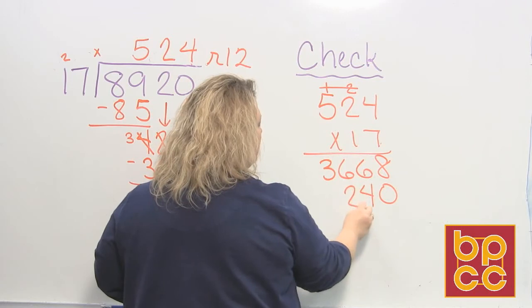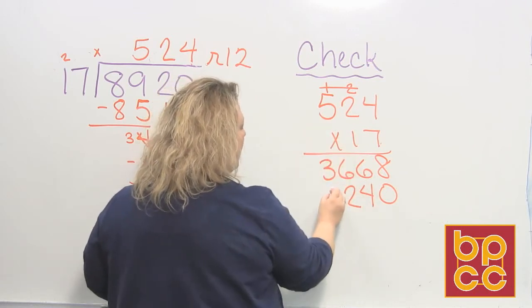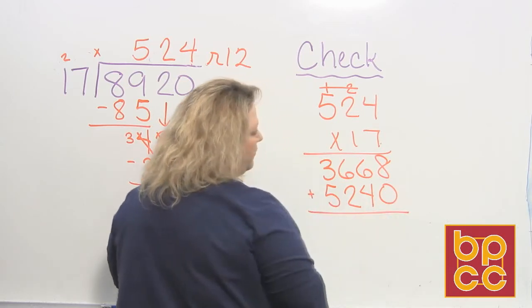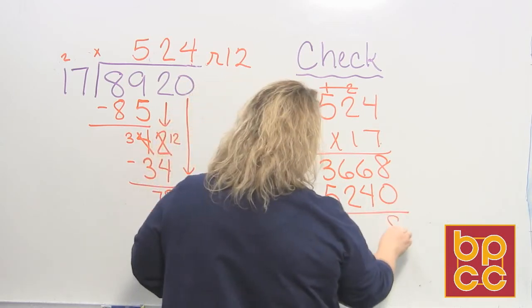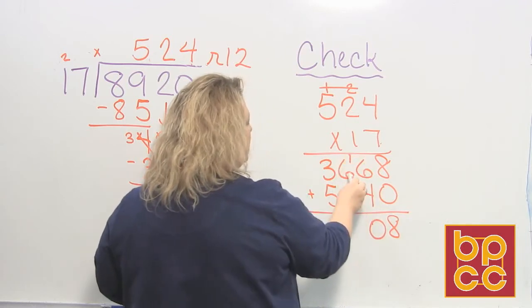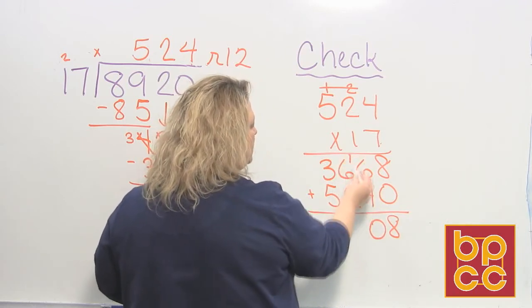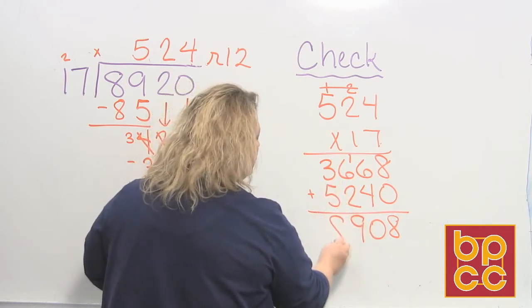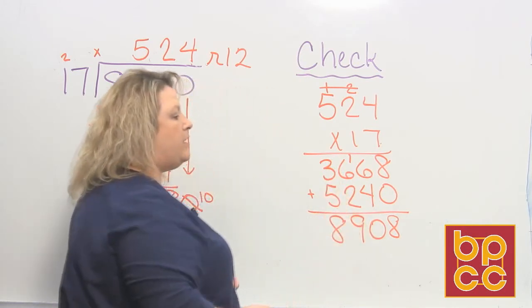1 times 2 is 2. 1 times 5 is 5. And then you add that. And when I add going down, 8 plus 0 is 8. 6 plus 4 makes 10. Carry the 1. 6 plus 2 makes 8. Plus that 1 makes 9. 3 plus 5 makes 8. And I get 8,908.